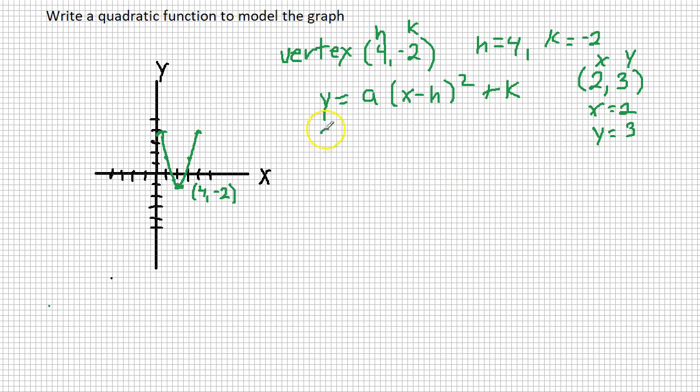So in place of the y, I'm going to put 3. We don't know a, so I write a, parentheses. In place of x, I'm going to substitute 2 minus h is 4, close parentheses, squared, plus k. Well, k is negative 2, so we say minus 2.